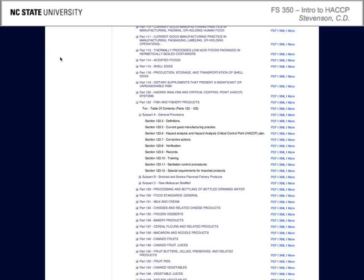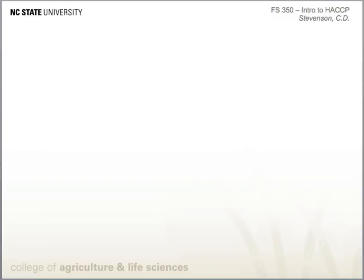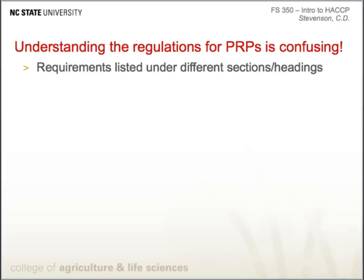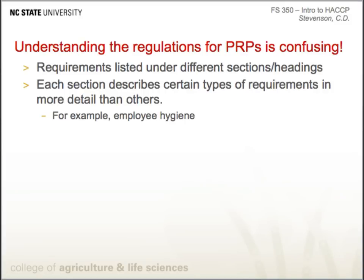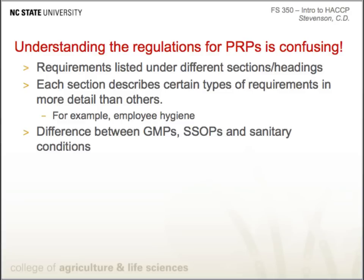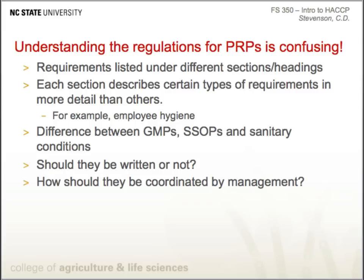These requirements can be quite confusing for several reasons. First, they are listed under different sections and headings, and each section describes certain requirements in more detail than others — employee hygiene is a good example of this. Another confusing part is the difference between good manufacturing practices, sanitation, and sanitation standard operating procedures. It is also difficult to differentiate whether these prerequisite programs need to be written or not, and exactly how they should be coordinated by management within a food processing operation.